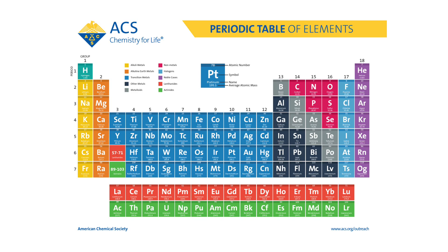Hello students, welcome back to my channel. Let's continue the discussion about the periodic table and its division. As we already discussed, periodic table elements are divided into groups, periods, and blocks. If we discuss the groups division, then some of the groups are named after their special properties.